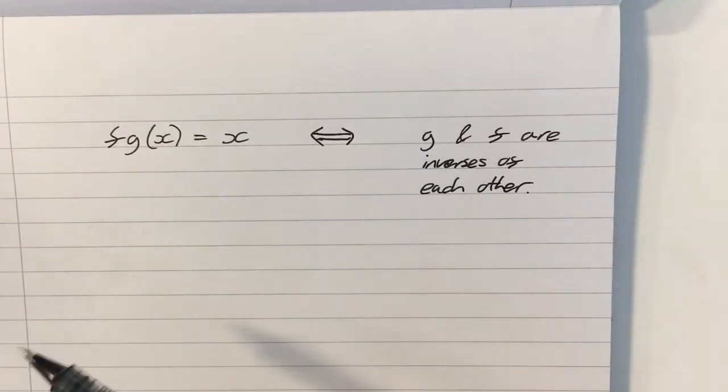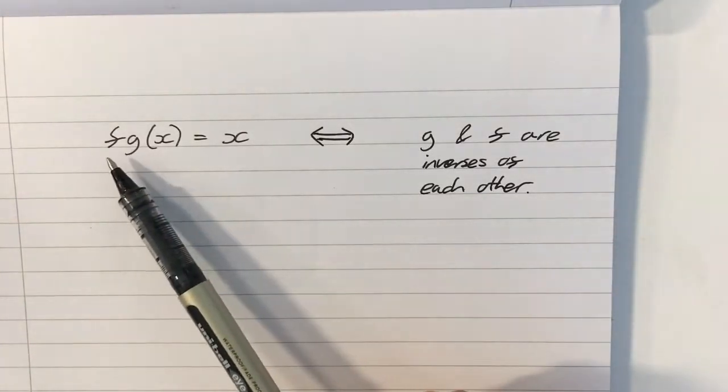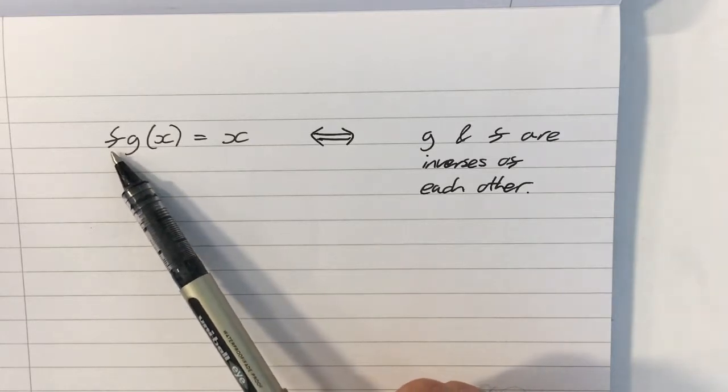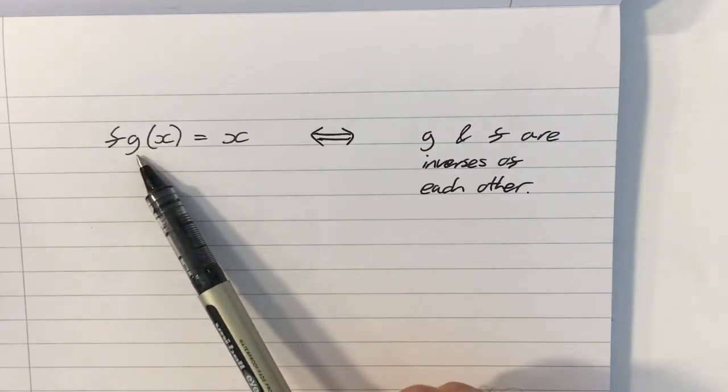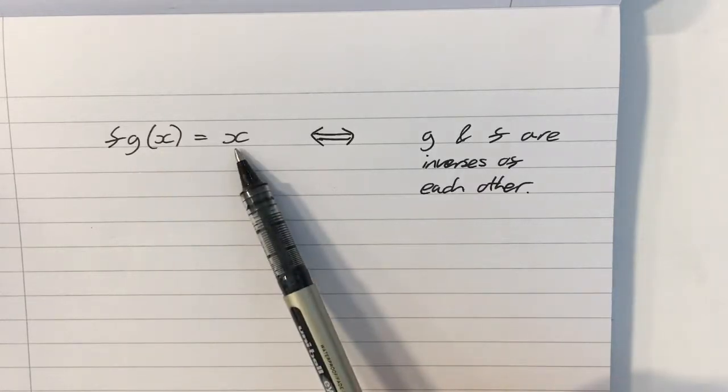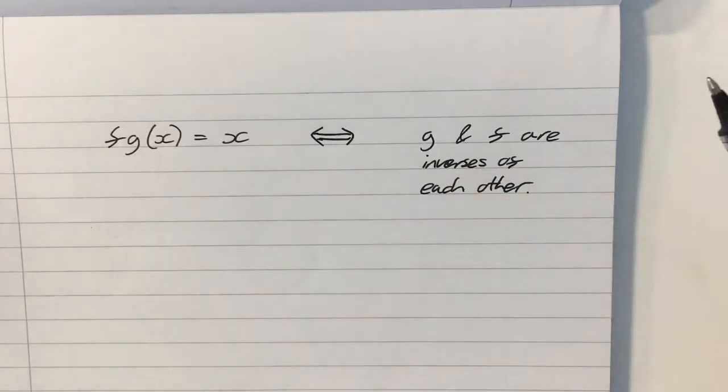Okay, inverse functions. If you have a situation where you have a function and you composite it with another function and it comes out to be x, then it means they are both inverses of each other.